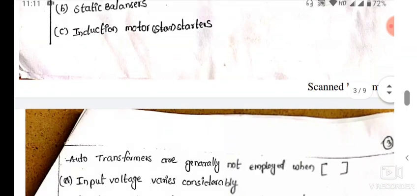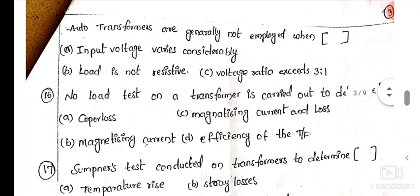15. Auto transformers are generally not employed when input voltage varies considerably, load is not resistive, voltage ratio exceeds an auto.